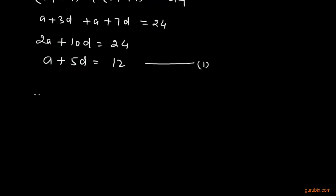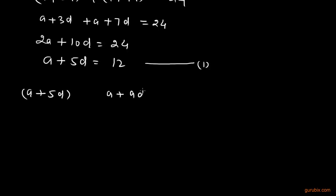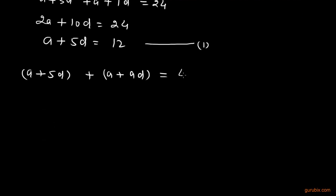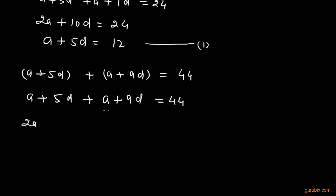We are also given that the sum of the 6th and 10th term is 44. The 6th term is A plus 5D and the 10th term is A plus 9D. Adding these gives A plus 5D plus A plus 9D equals 44, which simplifies to 2A plus 14D equals 44. Dividing by 2, we get A plus 7D equals 22.